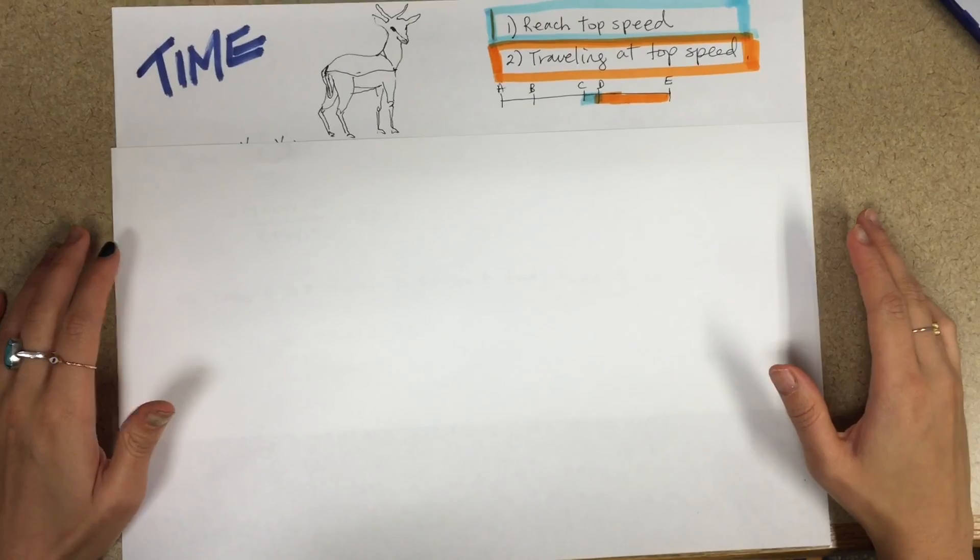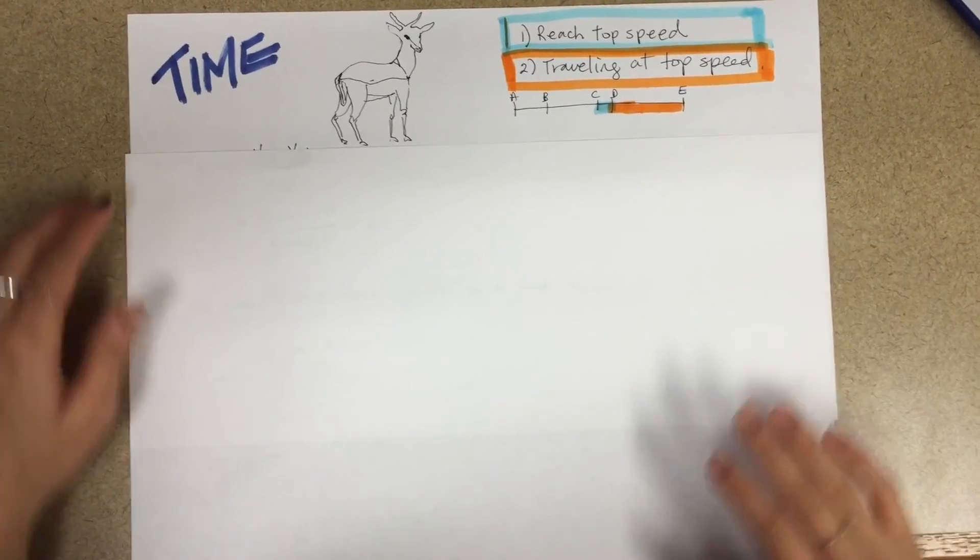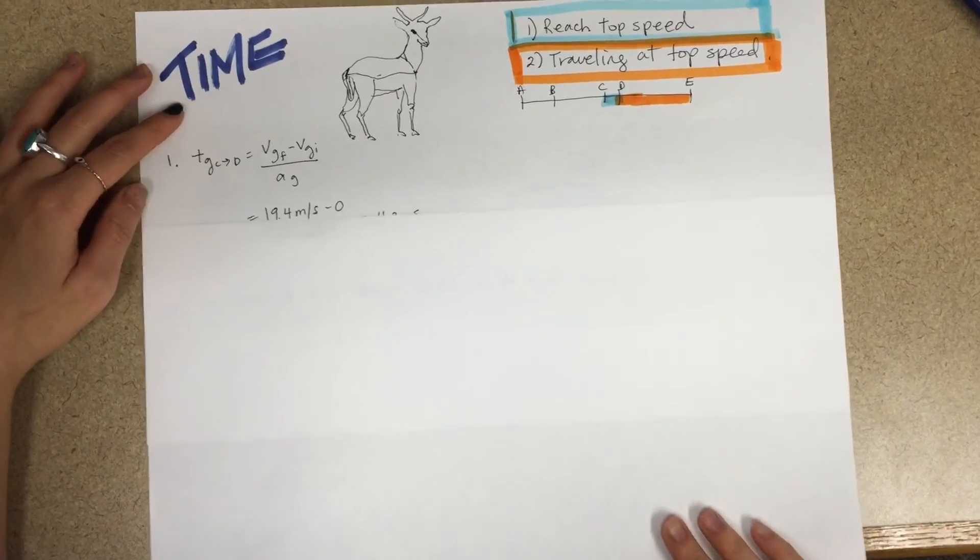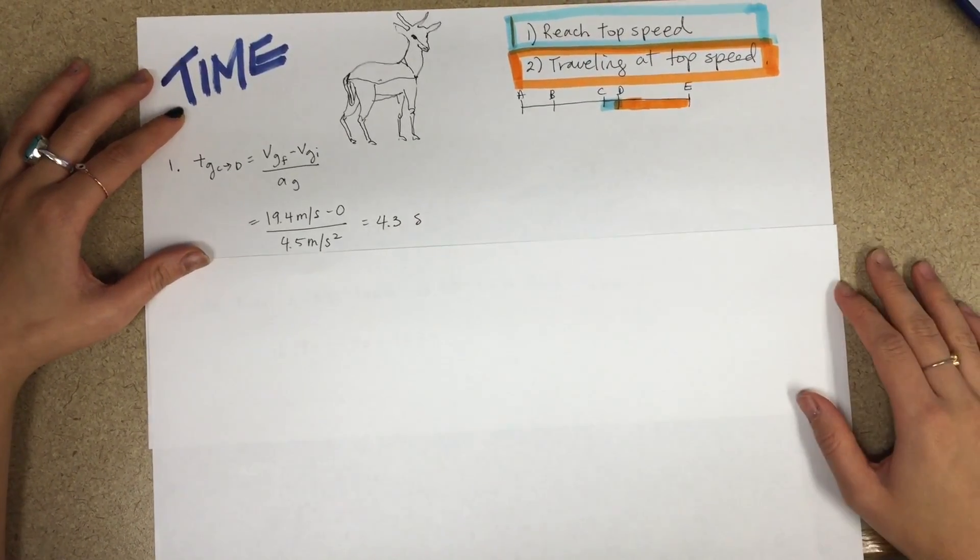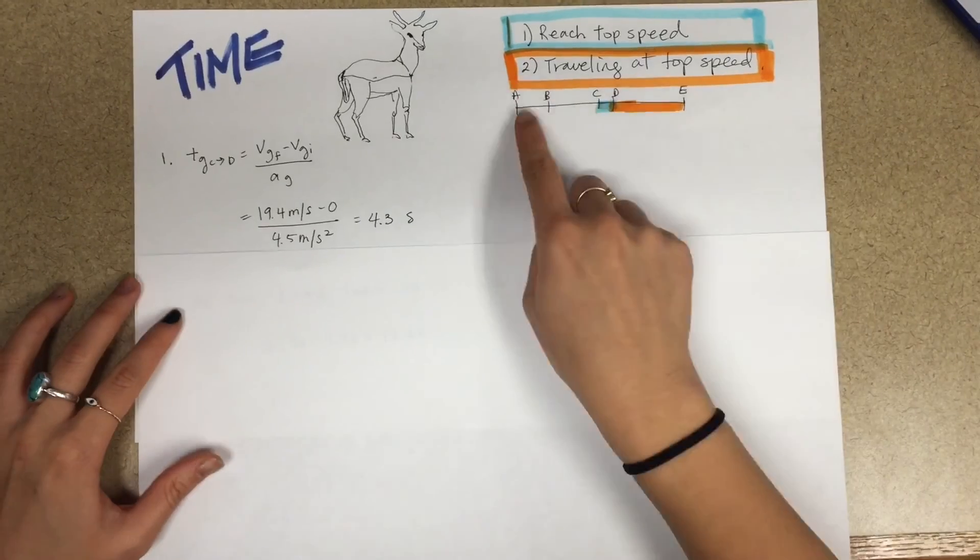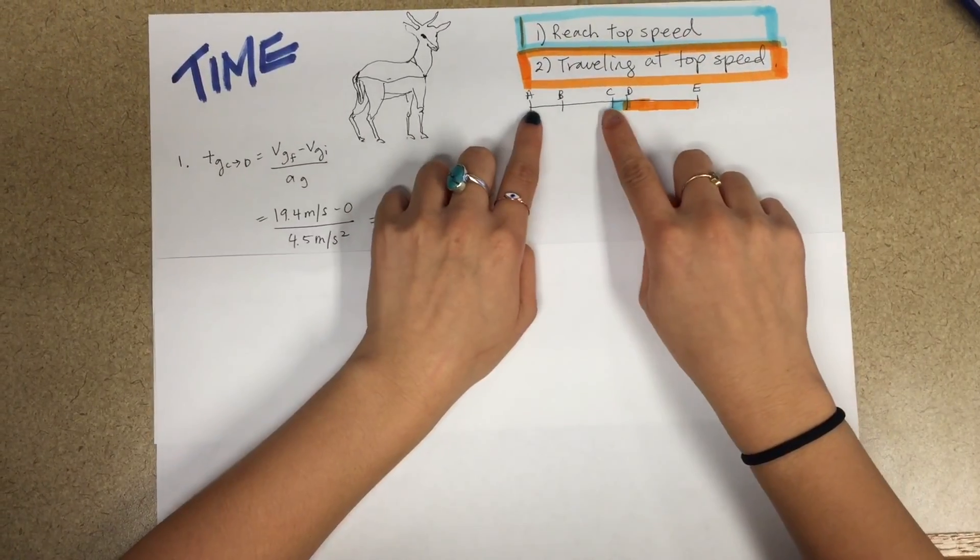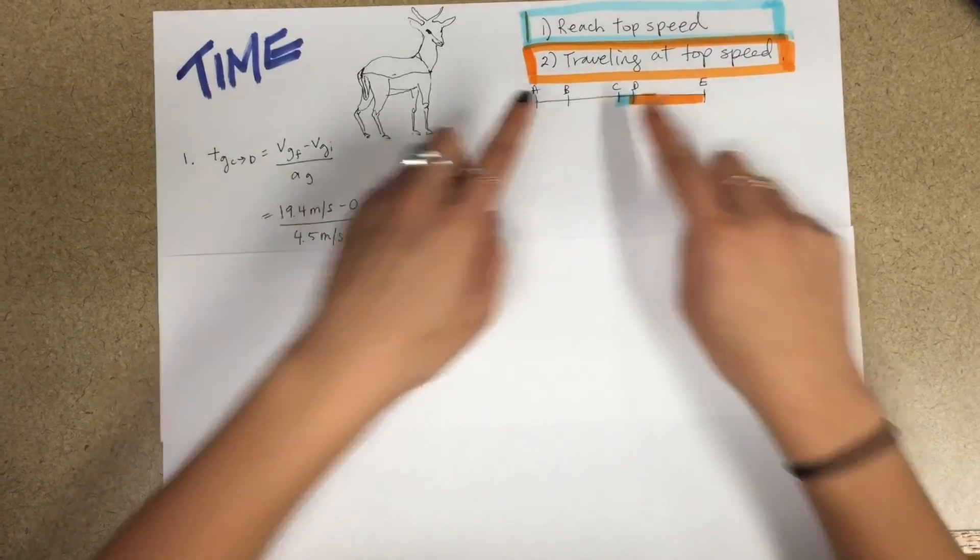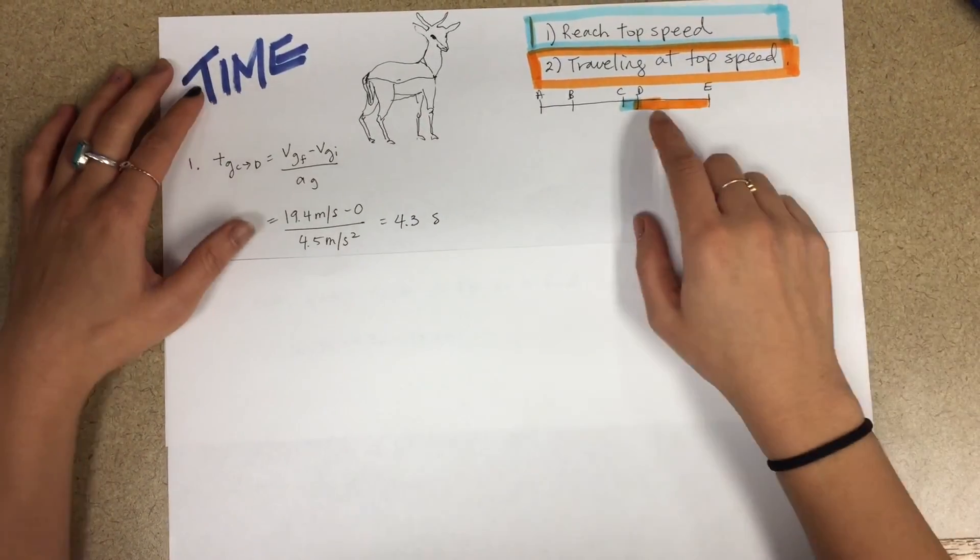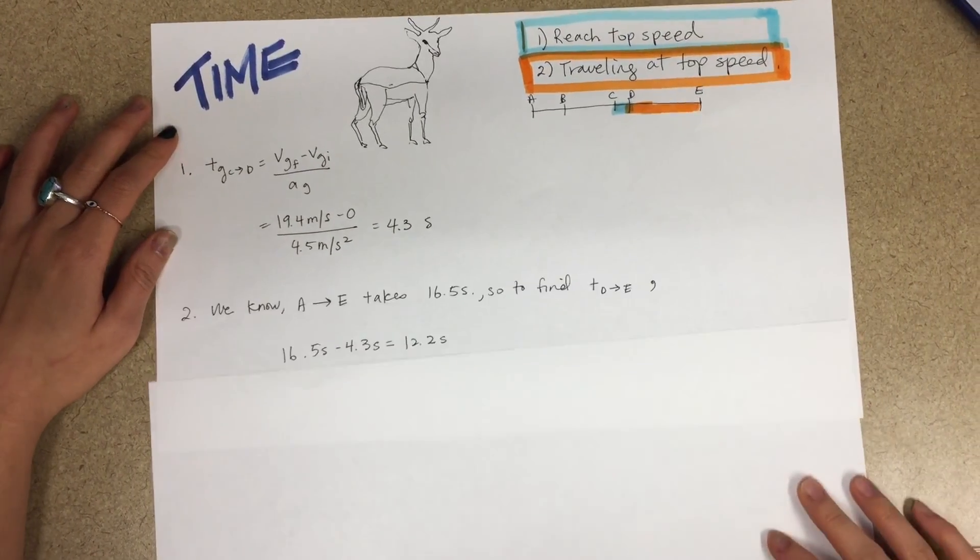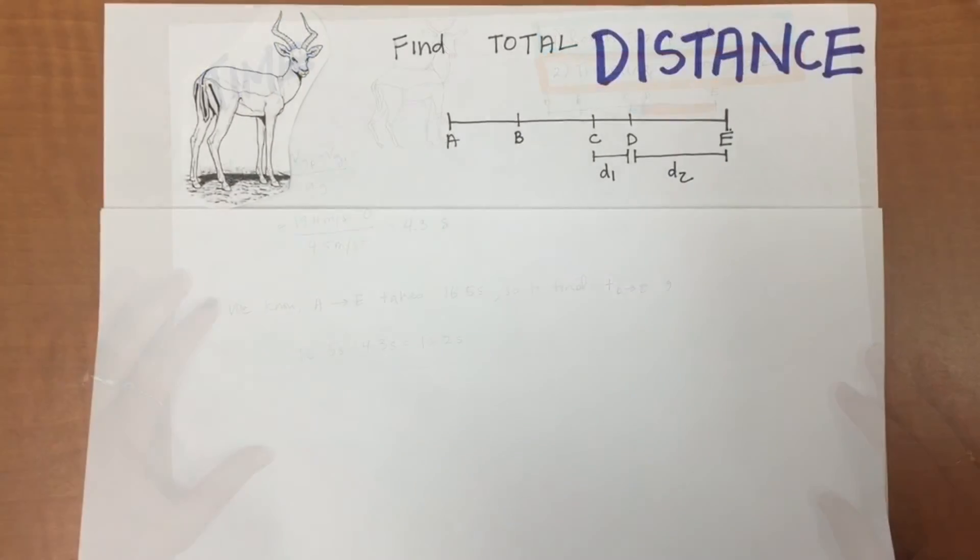We need to find the time it takes for the gazelle to reach top speed. Using the same equation we used previously for the cheetah, this gives us 4.3 seconds. We know that the time it takes for the cheetah to go from A to E is 16.5 seconds. And since both animals start at the same time, we subtract the amount of time it takes for the gazelle to go from point C to E by 4.3 seconds. This gives us 12.2 seconds. Almost done.